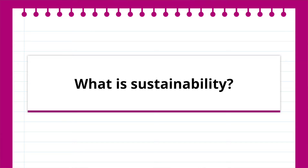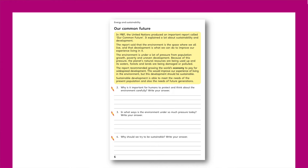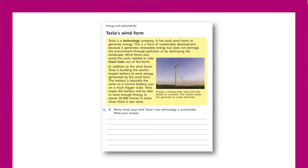Now let's take a closer look at each of these lessons in turn. The first lesson asks: what is sustainability? Pupils will be pushed to consider the relationship between humans, the environment and the economy. Drawing on a UN report called Our Common Future, pupils will consider how people can continue to grow the economy without damaging the earth and its resources. An example of the company Tesla building wind farms will demonstrate how this might be possible.